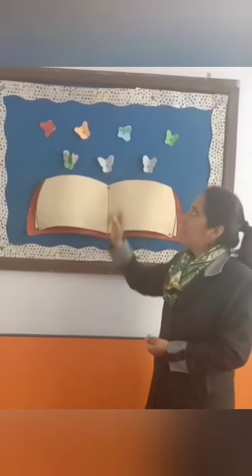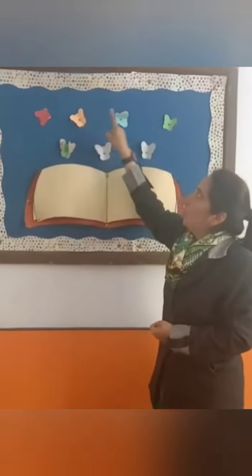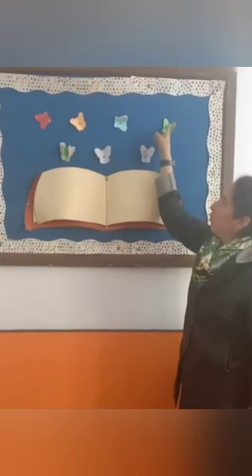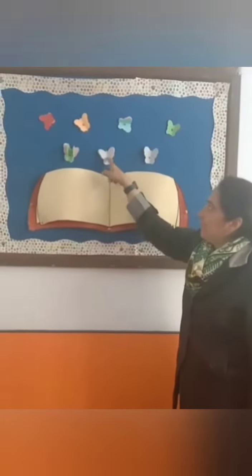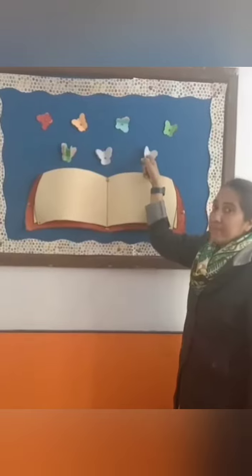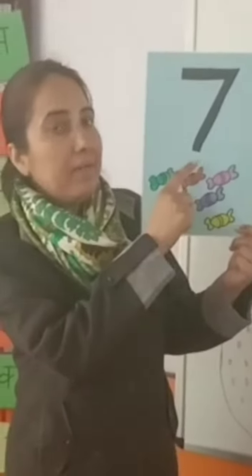Now let's count how many butterflies are there. Let's start. One, two, three, four, five, six, and seven. Yes, seven butterflies are there. Which number is this? Yes, number seven.